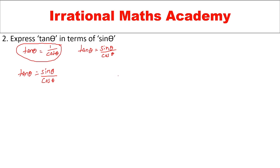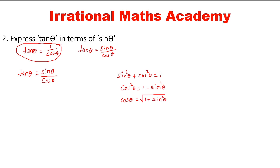For that we need to use the relationship between sin and cos: sin²θ + cos²θ = 1, so cos²θ = 1 - sin²θ. Since we need cos θ, we get cos θ = √(1 - sin²θ). We will substitute here: tan θ = sin θ / √(1 - sin²θ).